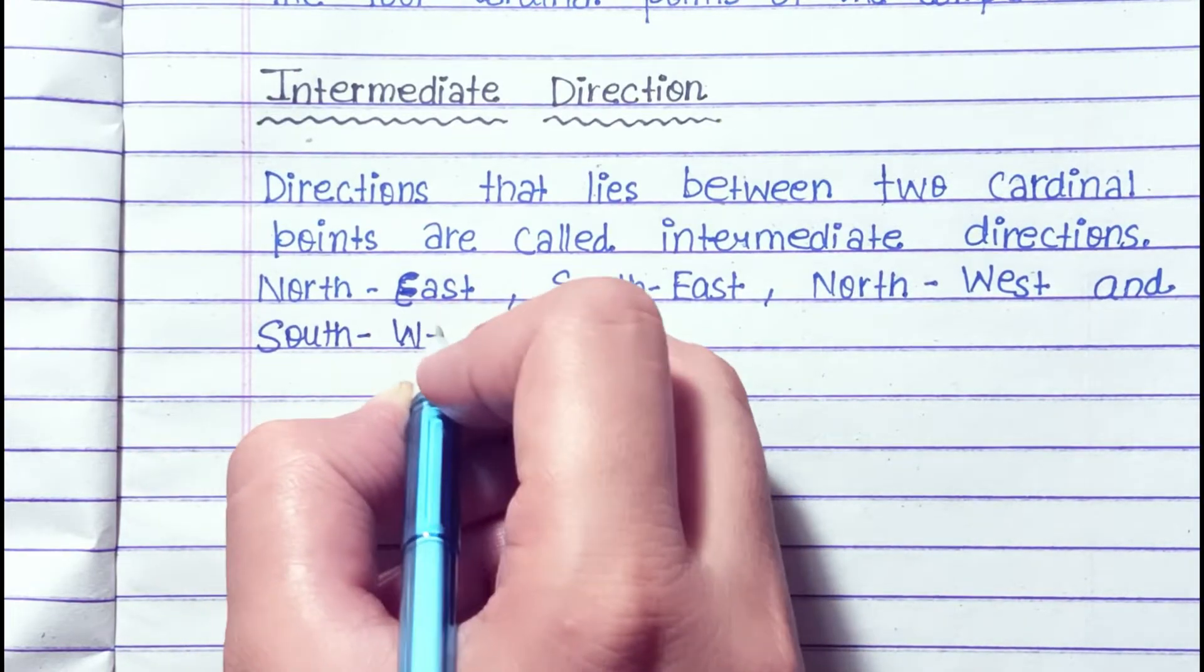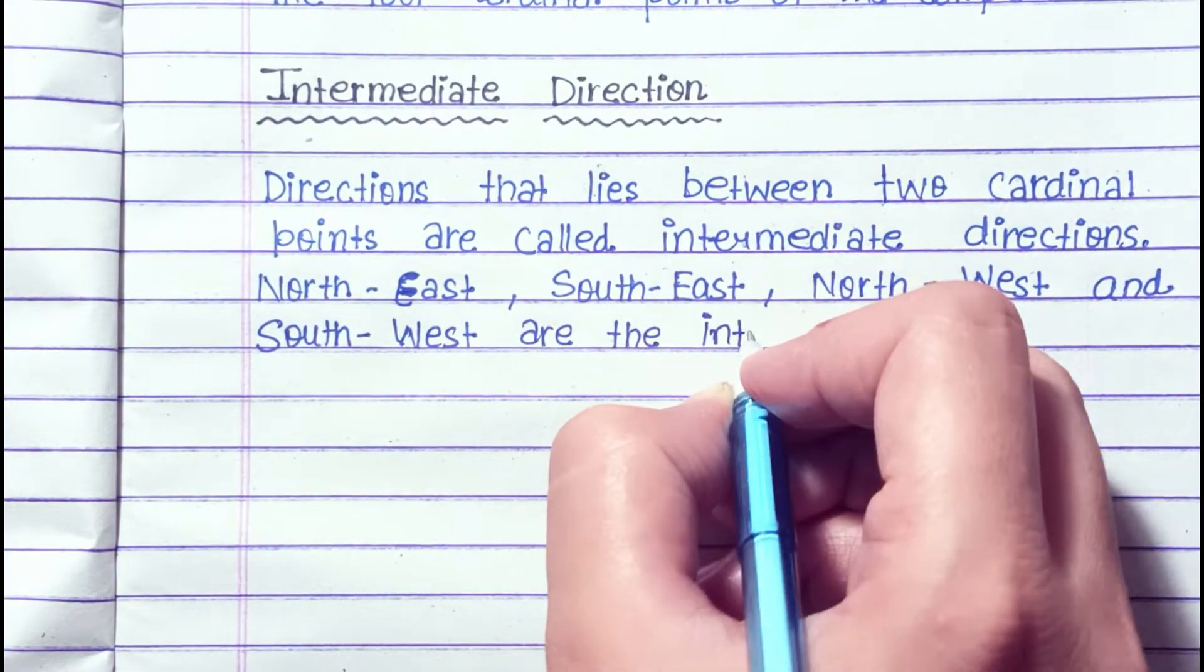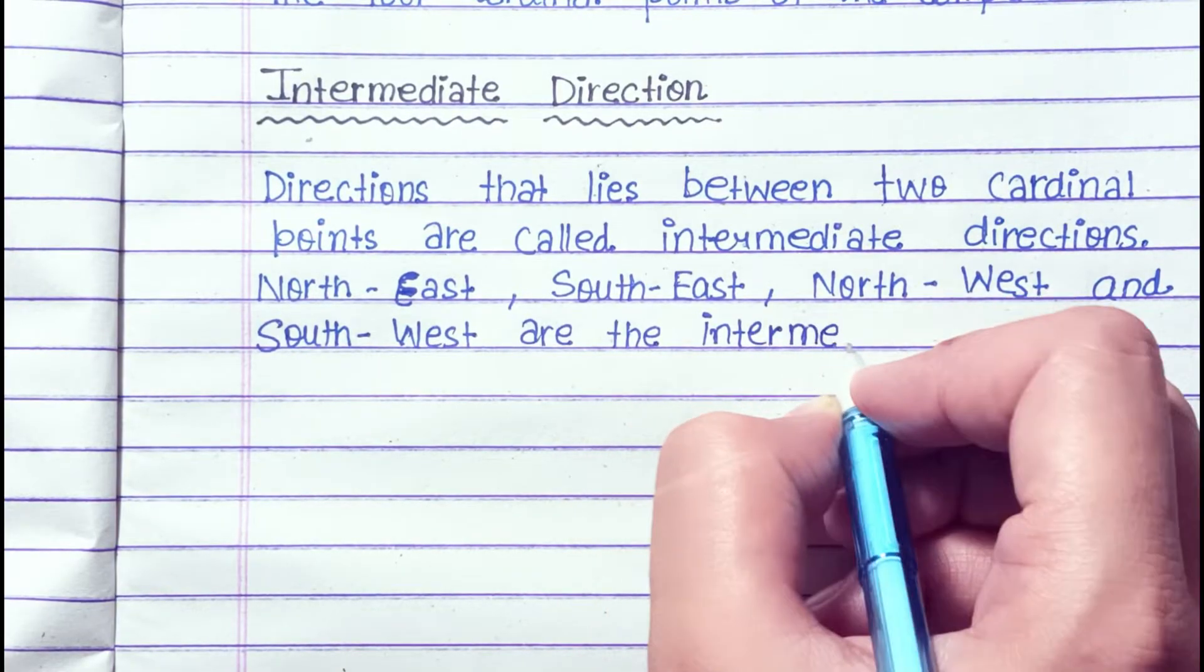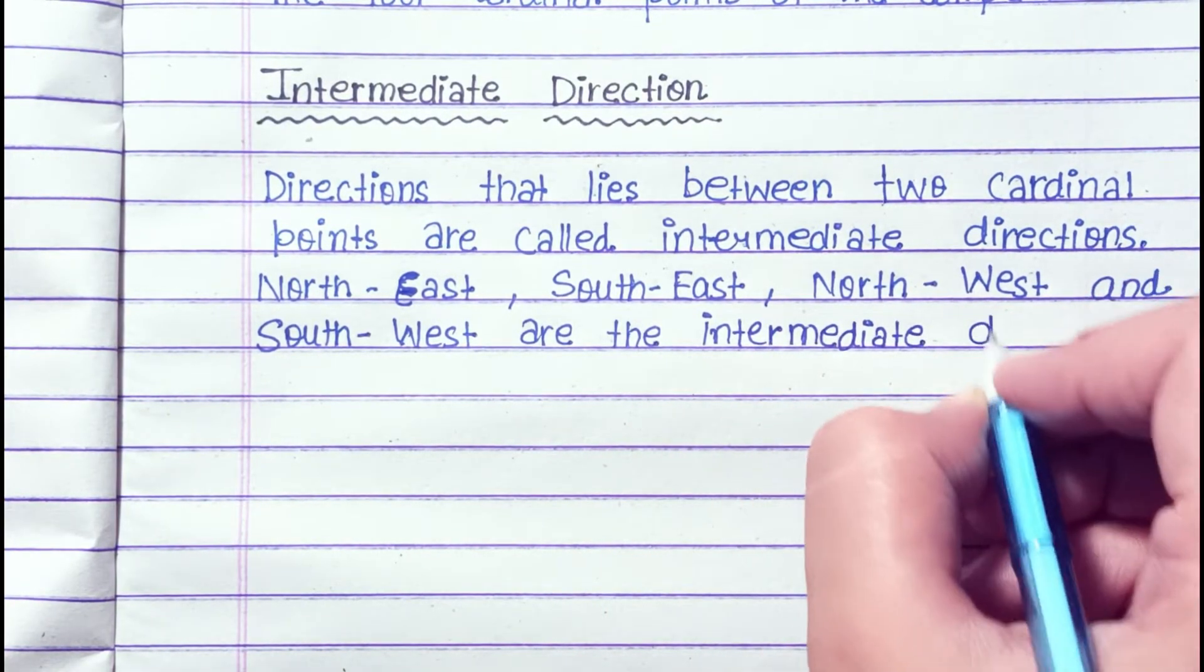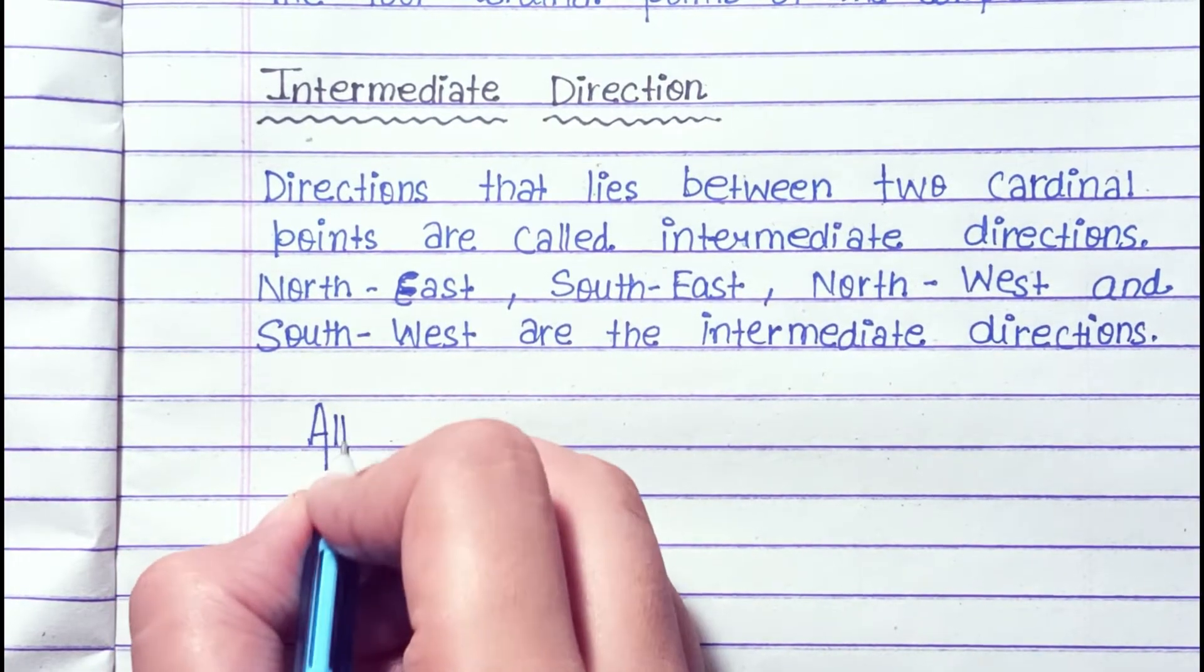Intermediate direction. Directions that lie between two cardinal points are called intermediate directions. Northeast, southeast, northwest, and southwest are the intermediate directions.